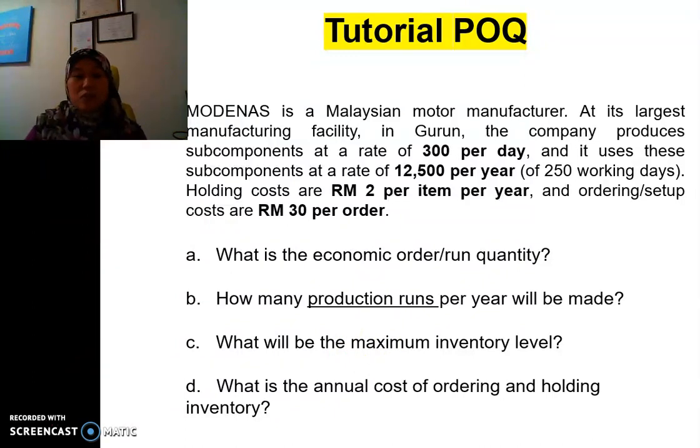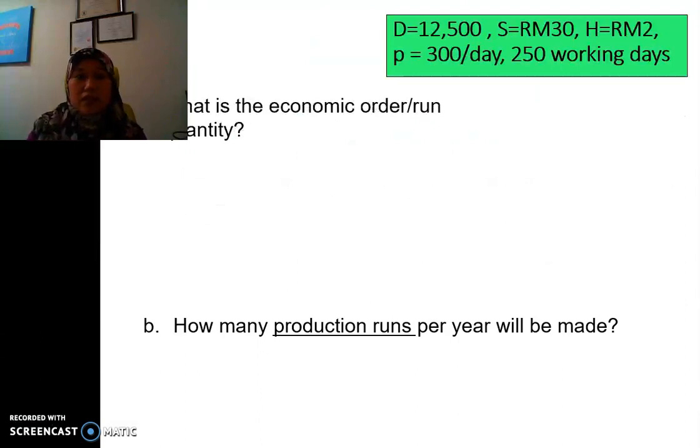First we take a look at the information given, in which the demand per year, we have 12,500, S is RM30, H is RM2, P they give us, in which the production rate of the subcomponent is 300 per day, and then we have 250 working days.